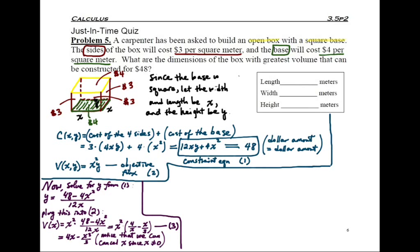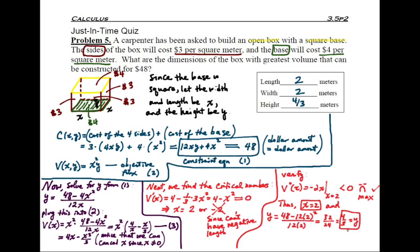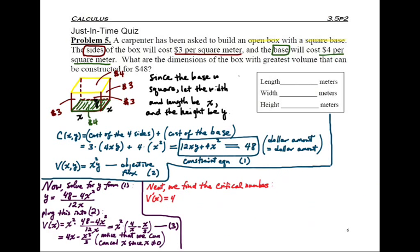We call this equation three because that is the one we're going to try to optimize with. So the next thing we do is the derivative test, in particular the second derivative test. Step one of the second derivative test is to find critical numbers. So we find the derivative of the volume expression V. That is very straightforward. That's just 4 minus one-third times 3x squared. Simplify that a little bit. You get 4 minus x squared. If you set that equal to zero and solve for x, we get x equals 2. Notice that we cannot have x equals negative 2 because we can't have negative length in a word problem like this.